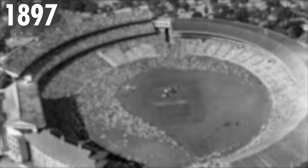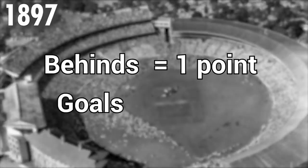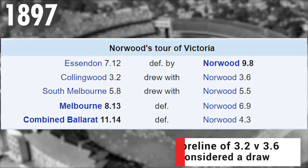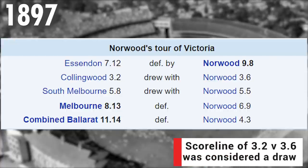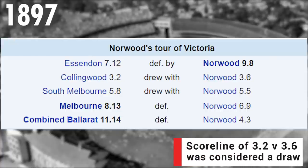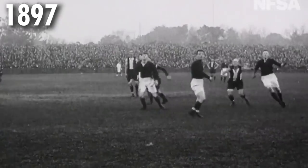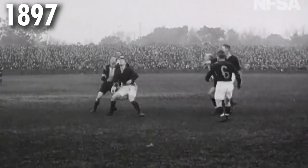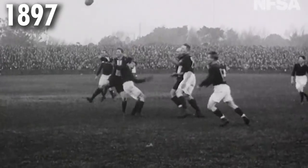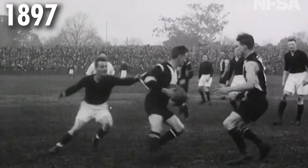Ahead of the start of the Victorian Football League, more changes were made to the rules — most notably to how the scoring system worked. Behinds were introduced and were worth 1 point, with goals being worth 6 points. Previously, goals were only awarded 1 point as the only form of scoring. The little mark was also abolished, which was essentially what handballing was back in 1897.